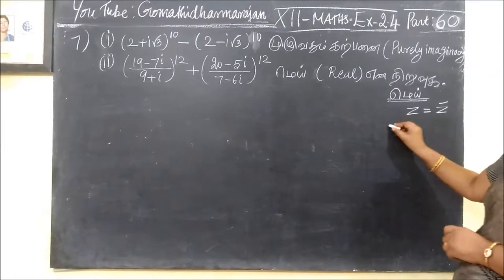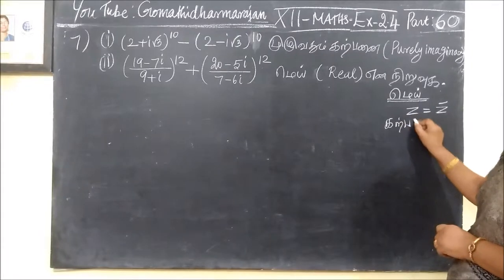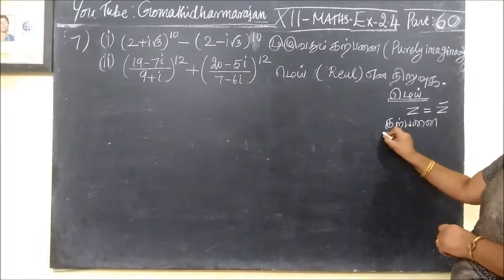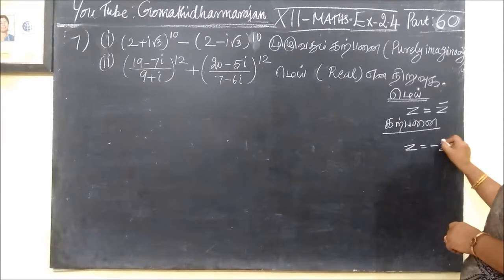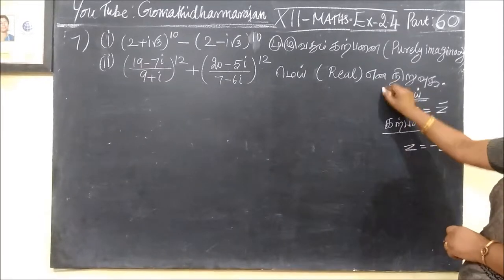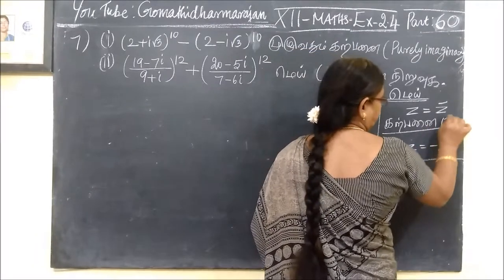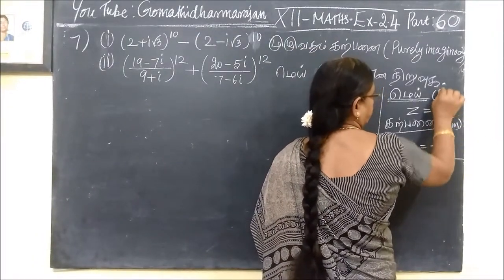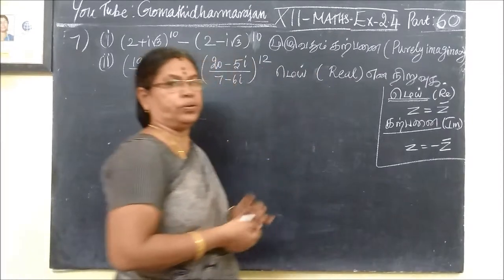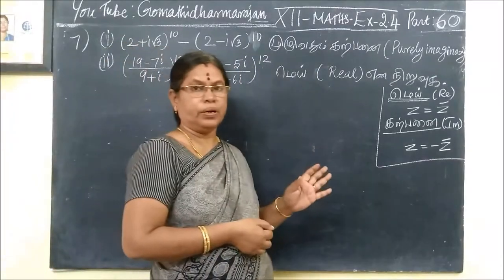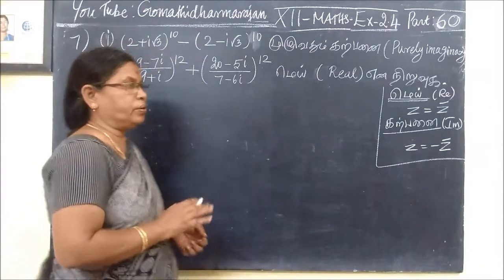This is the condition. Z equal to minus Z power — this is the ready-made condition. We can use this: the sum is imaginary, this is real. So this is the condition: real is Z equal to Z bar, imaginary is Z equal to minus Z bar. This condition is used.